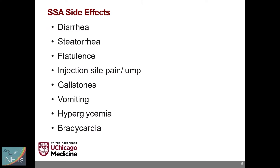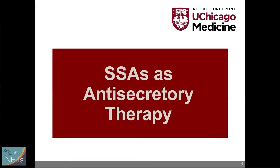Here are some of the side effects of somatostatin analogs. They include diarrhea and stomach cramps, and steatorrhea — because SSAs actually slow down the pancreas's production of digestive enzymes, which can lead to bloating and flatulence. Other side effects include injection site pain and lumps, gallstones, nausea, vomiting, hyperglycemia, and low heart rate. Most of these side effects are transient and mild in severity, and therefore SSAs have a very favorable toxicity profile, and patients generally have a very favorable quality of life on treatment.